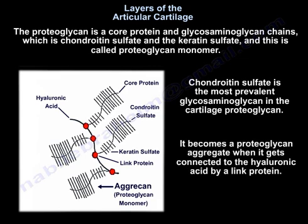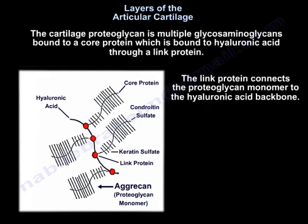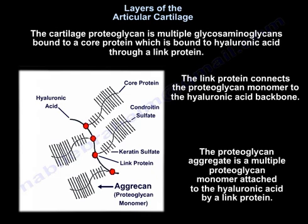It becomes a proteoglycan aggregate when it gets connected to hyaluronic acid by a link protein. The cartilage proteoglycan consists of multiple glycosaminoglycans bound to a core protein, which is bound to hyaluronic acid through a link protein. That link protein connects the proteoglycan monomer to the hyaluronic acid backbone. The proteoglycan aggregate is multiple proteoglycan monomers attached to hyaluronic acid by a link protein.